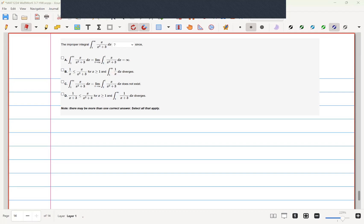Welcome back, this is problem 14 of Weber 3.7, and we have another improper integral here of x over x squared plus 3. In this one, I'll be proving why a and d are the only viable options.